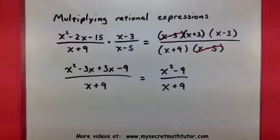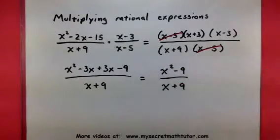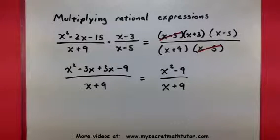Now be careful, it may seem tempting to try and cancel out an x, or even try and cancel out the 9's, but we can't do that. We can only cancel out factors, and factors are pieces that are being multiplied together. And as we can see, the x and the 9 are being subtracted, so they're not factors.